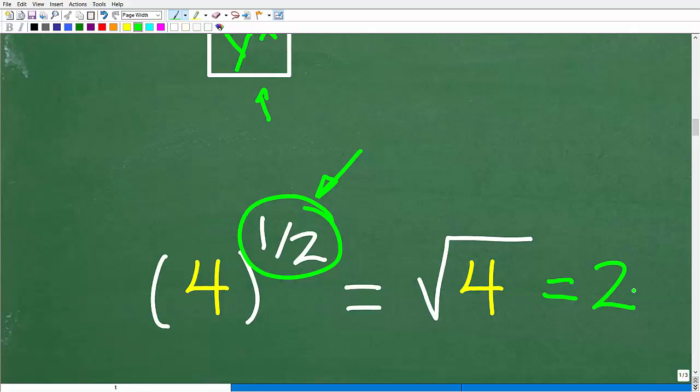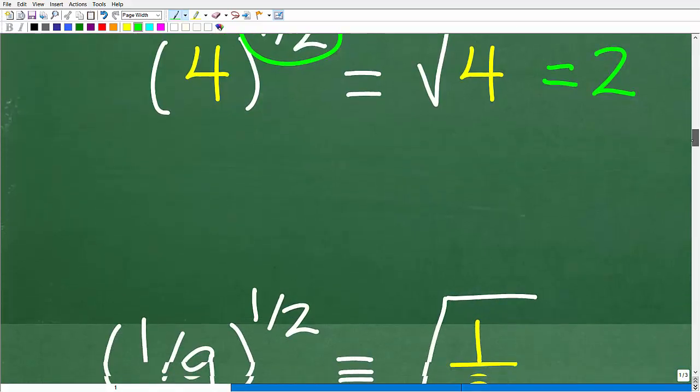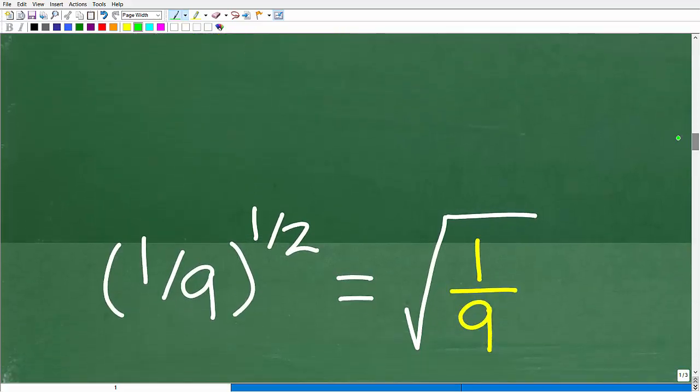Now that we understand that taking anything to the 1/2 power is taking the square root of that number, doing our problem should be pretty easy. Here is our original problem. We have 1/9 to the 1/2 power. So what we want to do is take the square root of 1/9.